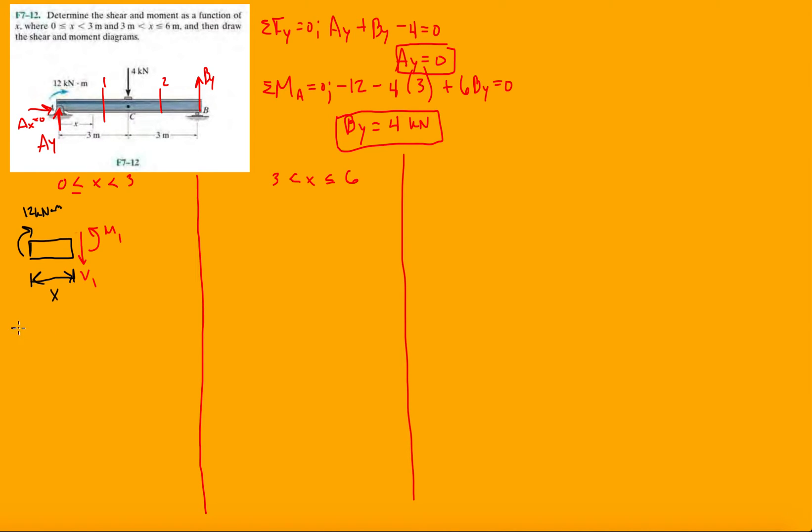In the Y direction, V1 will be zero, so there's no shear between zero and three. And then looking at the moments, we have positive M1 minus 12 equals zero, so M1 is 12. Take a derivative of a constant and it's zero, so we have V1 is zero.